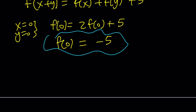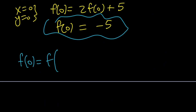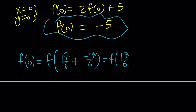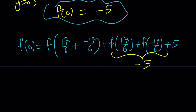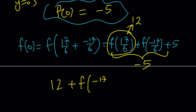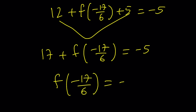In the formula, replace x with 17 over 6 and y with negative 17 over 6 so that x plus y equals 0. This gives f of 0 equals f of 17 over 6 plus f of negative 17 over 6 plus 5. We know f of 0 is negative 5 and f of 17 over 6 is 12. So 12 plus f of negative 17 over 6 plus 5 equals negative 5, meaning 17 plus f of negative 17 over 6 equals negative 5, giving f of negative 17 over 6 equals negative 22.